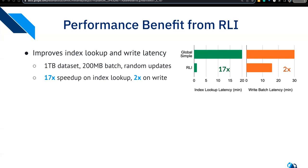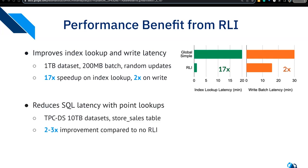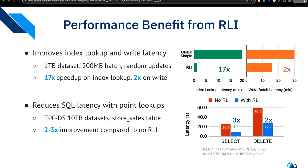We also measured how the record-level index improves SQL latency with point lookups. Using the store sales table in the TPC-DS 10-terabyte dataset, we ran two query types: a SELECT * for a particular record key value and a DELETE for a particular record key value. Using the record-level index for filtering, we see a 2 to 3x improvement compared to no record-level index. The record-level index was released in Hudi 0.14.0.